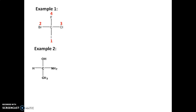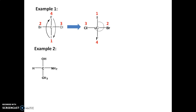We exchange fluorine with iodine and iodine with fluorine. While doing so, we also exchange group 2 with 3 and 3 with 2 to get the correct answer. After exchanging, we get the new structure. Going from number 1 to 2 to 3, it is in the clockwise direction, so the configuration is R.